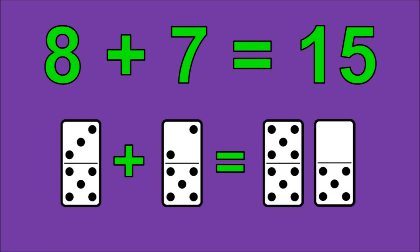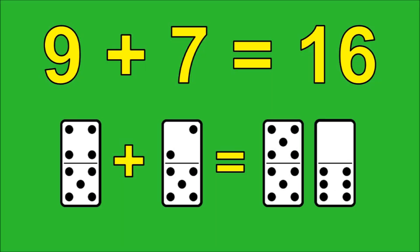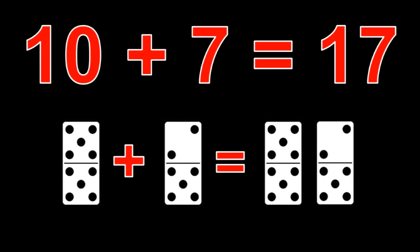8 plus 7 is 15, 9 plus 7 is 16, 10 plus 7 is 17.